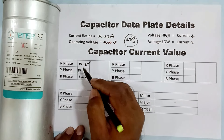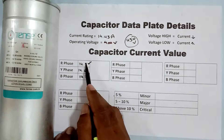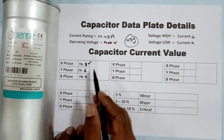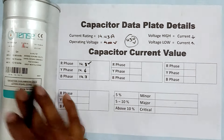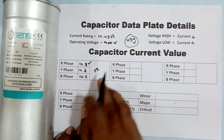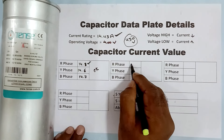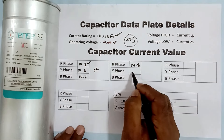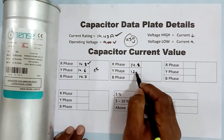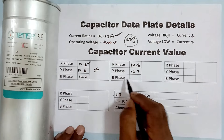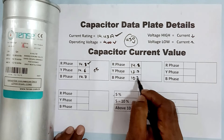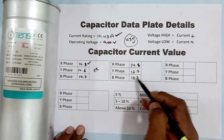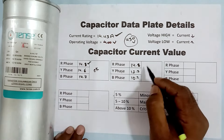The current readings are 14.8A, 14.6A, and 14.7A — these are almost balanced. In this condition, we can say this capacitor is okay. However, if we were getting 14.8A on R phase, 12.7A on Y phase, and 10.7A on B phase, the whole current rating would be unbalanced, and in that condition the capacitor would be considered faulty and must be replaced.